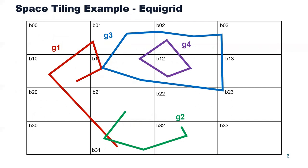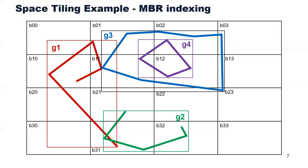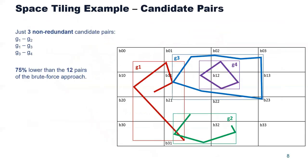As an example, consider the four geometries we saw earlier. The first step in applying filtering is to define an equigrid, shown here in black, where every rectangle has the same dimensions. Next, we compute the minimum bounding rectangles of every geometry and place each geometry in the tiles that intersect its MBR. Finally, we retrieve all pairs of co-occurring geometries from the tiles. Since every geometry participates in multiple tiles, there are repeated pairs across different tiles, so we are only interested in the non-redundant pairs. In our example, we have just three non-redundant pairs, which is 75% lower than the 12 pairs considered by the brute force approach.